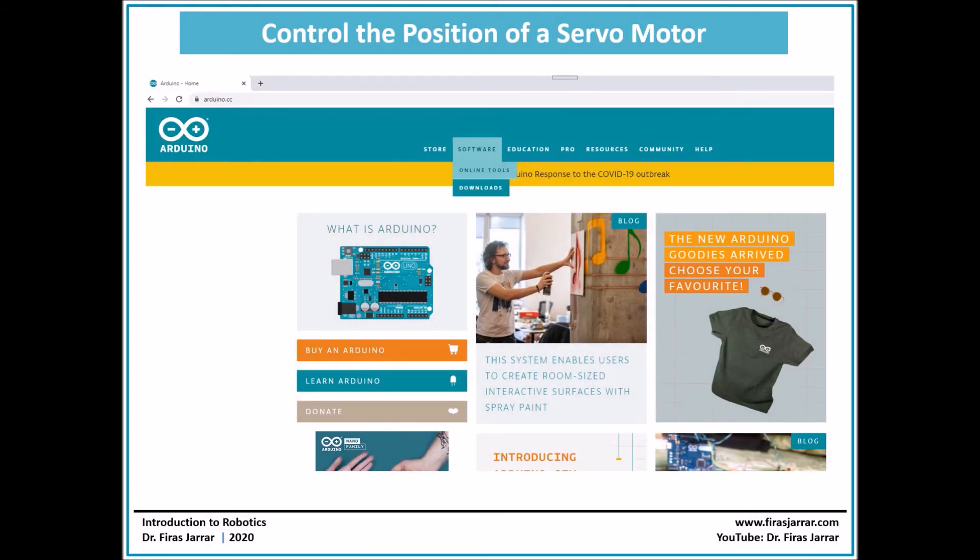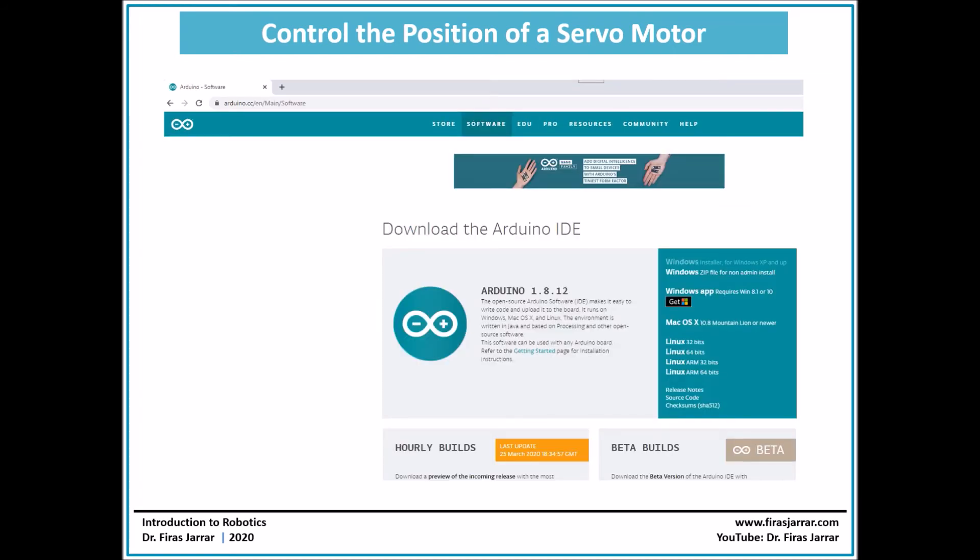Then what you need to do is to download the Arduino software. This is, you can find it in their website Arduino.cc. From here software downloads, you get different options, so you select the one most suitable for you.